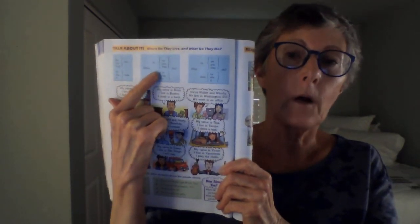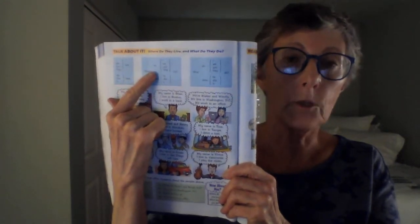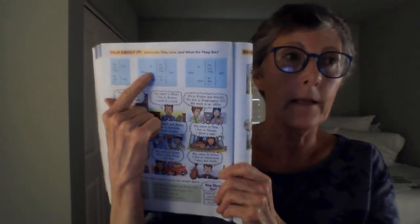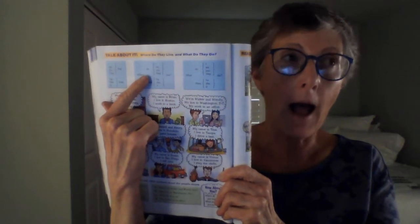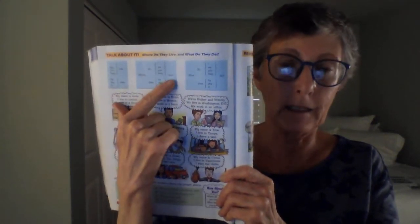And remember, we have the auxiliary verb do. Where do, and that's going to be where do I, we, you, they live.